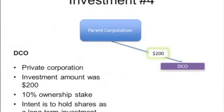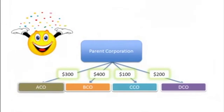Finally, PECO invested $200,000 in DECO, another private corporation. This investment gave PECO 10% of the issued and outstanding shares. Bob thinks this investment is likely to be a long-term investment as well. The difference between the price PECO paid for its shares and the underlying net asset value has been attributed to fixed assets with a 5-year life.